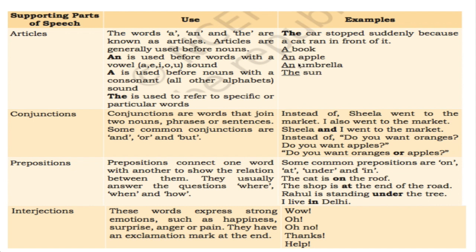To summarize: if the word starts with a vowel sound, use an. If it starts with a consonant sound, use a. So an apple, an umbrella — vowel sound, use an. A uniform — starts with consonant sound 'yu,' so use a. The is used when referring to something specific, like the Sun.